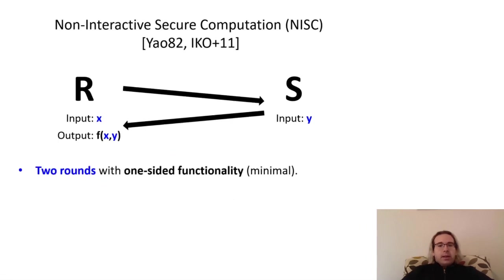In terms of round complexity, the best we can possibly hope to achieve is two-round or non-interactive secure computation, abbreviated NISC. A one-round protocol would inherently be susceptible to residual attacks, where the party receiving the message would necessarily be able to compute the output of F on an arbitrary input. Furthermore, for the same reason, it is inherently required that only the receiver, rather than both parties, obtain the final output.